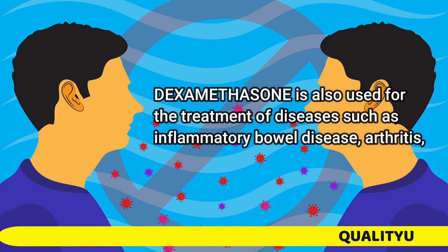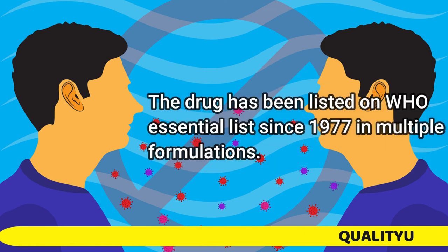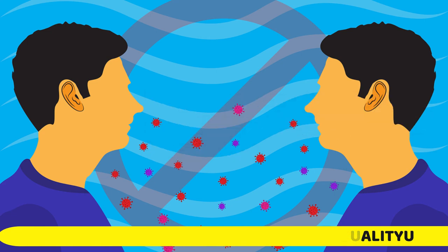Dexamethasone is also used for the treatment of diseases such as inflammatory bowel disease, arthritis, asthma, and eczema. The drug has been listed on the WHO Essential List since 1977 in multiple formulations.